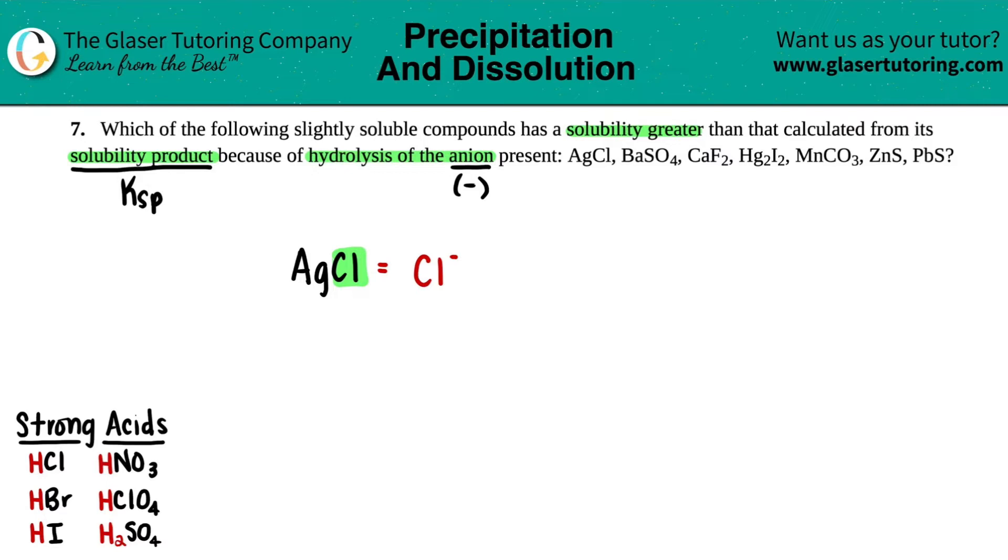Just be able to pinpoint that it's chlorine. Chlorine is in group 17 or 7A—it's always going to be a negative one charge. Now let's keep running through these. We have BaSO4—which one is the anion here?